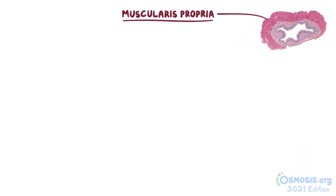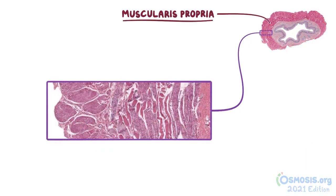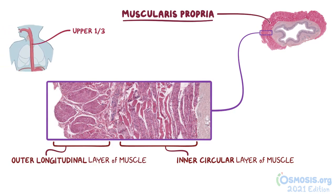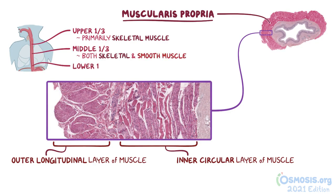The next main layer is the muscularis propria, which varies depending on the portion of the esophagus we're looking at. But throughout the entire esophagus, there'll be an inner circular layer of muscle and an outer longitudinal layer of muscle. The proximal portion of the esophagus is under voluntary control, so the upper third will have primarily skeletal muscle. The muscle type will gradually transition from skeletal to smooth muscle, so the middle third will have both skeletal and smooth muscle present, and the lower third will consist entirely of smooth muscle.